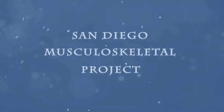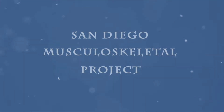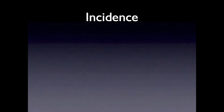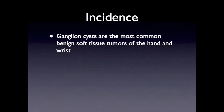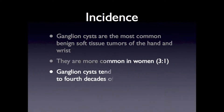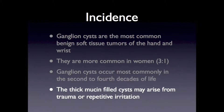Welcome to the San Diego Musculoskeletal Project. Today I'm going to discuss how to perform a ganglion cyst aspiration. Ganglion cysts are the most common benign soft tissue tumors of the hand and wrist. They occur more commonly in women at a three-to-one ratio with men, usually in the second to fourth decades of life. The thick mucin-filled cysts may arise from trauma or repetitive irritation.